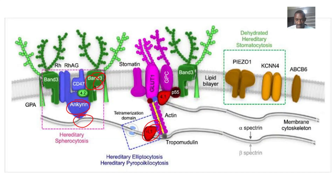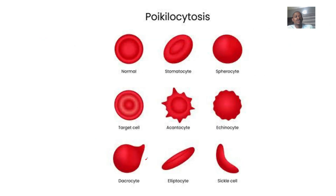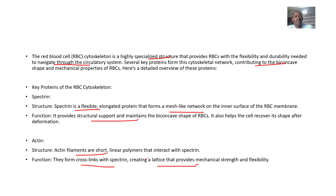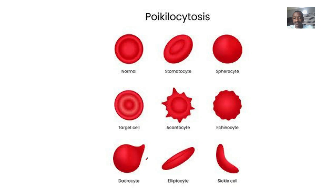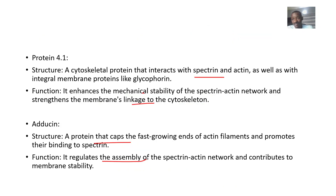There's also adducin, which is not listed in the diagram but is important. Adducin is a protein that caps the fast-growing end of the actin filament and promotes its binding to spectrin. Its function is to regulate the assembly of the spectrin-actin network and contribute to membrane stability. So to summarize, the proteins that make up the red blood cell cytoskeleton are spectrin, actin, protein 4.1, ankyrin, band 3, and adducin.